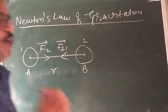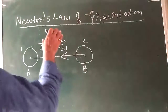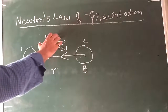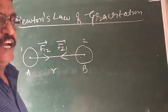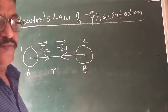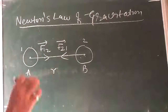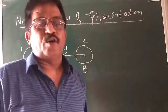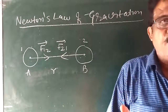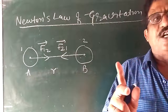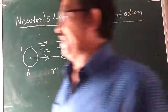So what does Newton's law of gravitation state? It states that everybody in the universe attracts every other body with a force which is directly proportional to the product of their masses and inversely proportional to the square of the distance between them — as we have seen in ninth class.